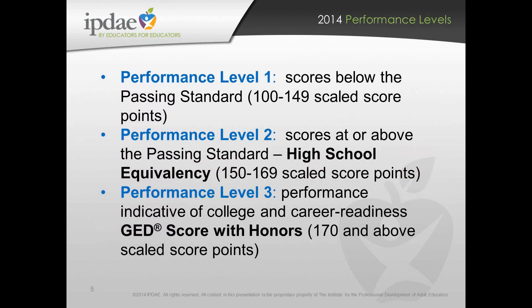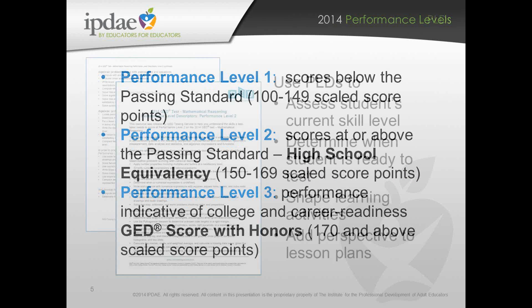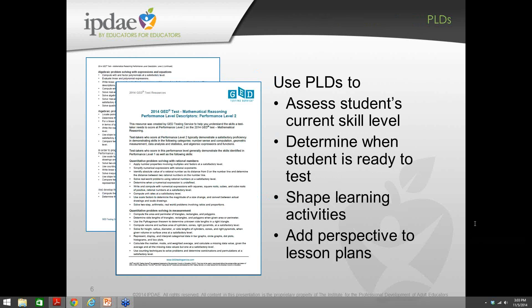Performance level 1 is where those students we're most concerned about sit, especially that group from 140 up to 149. We want to move them over into the 150 range so they can earn that high school equivalency. But we like to be overachievers in Florida — if we can work through to performance level 3, how about getting students a GED score with honors, that 170 and above? With some strategizing and crossing content areas, we should be able to do some of those things.